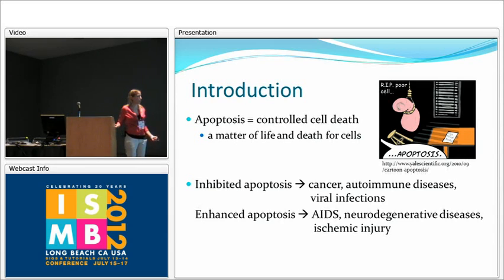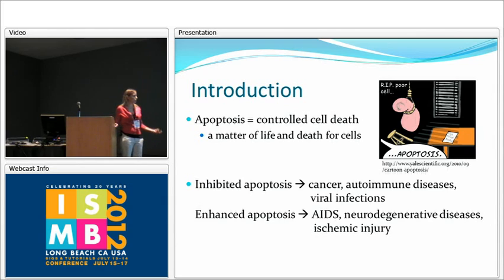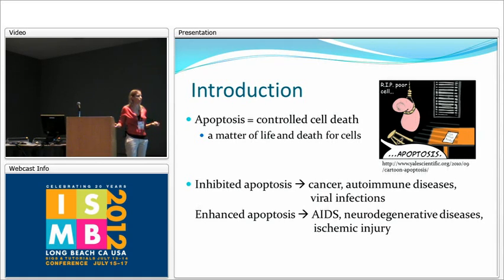I want to introduce some key concepts. Apoptosis is defined as the controlled cell death — it is a suicide of cells, and it is really important for the body because either inhibited or enhanced apoptosis may both cause really important diseases. If apoptosis is inhibited, it can cause diseases such as cancer and autoimmune diseases, and on the other side, it can cause diseases such as AIDS and neurodegenerative diseases.